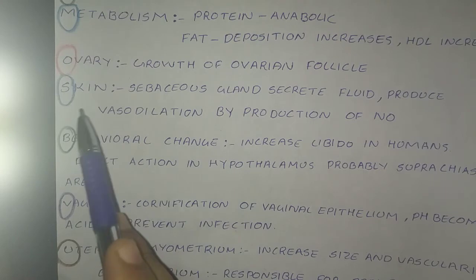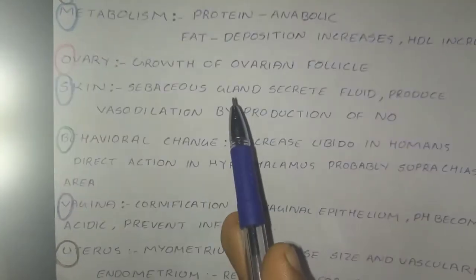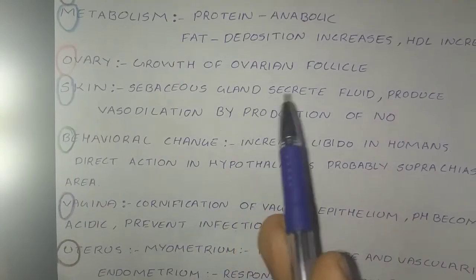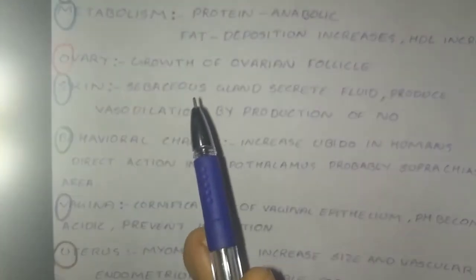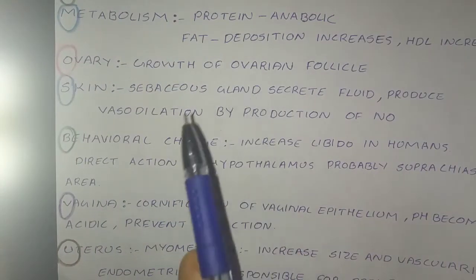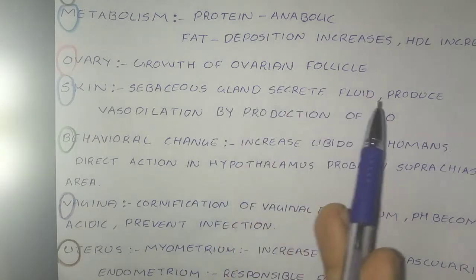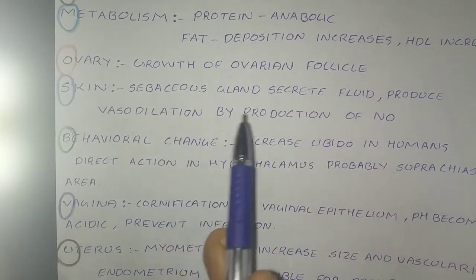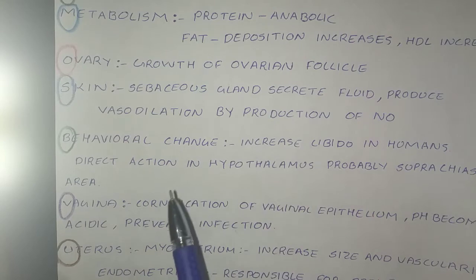S stands for skin. Estrogen increases the fluid secreted by the sebaceous glands and produces vasodilation through the production of nitric oxide (NO).